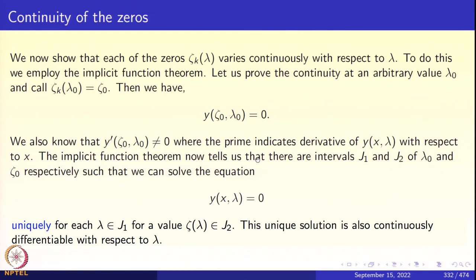When applying the implicit function theorem, you need two things: a seed solution f(a, b) = 0, and ∂f/∂y at (a, b) nonzero. Both conditions are met: (ζ₀, λ₀) is the seed solution, and the derivative with respect to the first variable at (ζ₀, λ₀) is nonzero. So the implicit function theorem is applicable, and each zero varies continuously with λ.